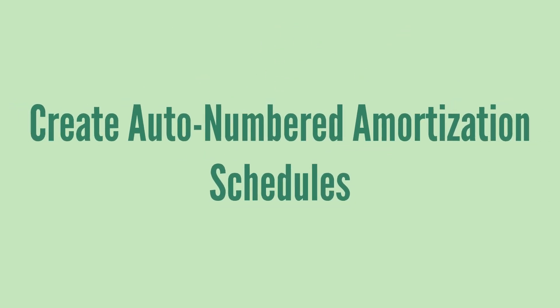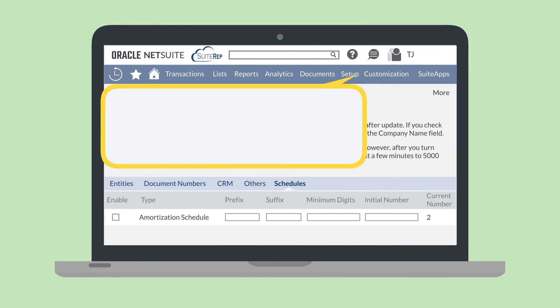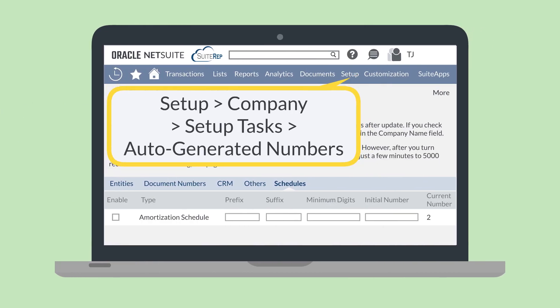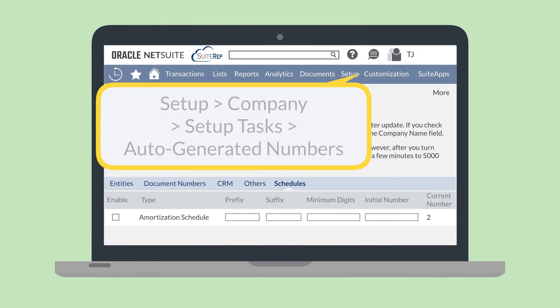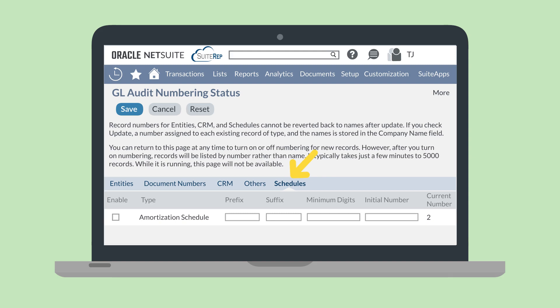Next, you'll have the option of creating auto-numbered amortization schedules. To do that, navigate to Setup, Company, Setup Tasks, Auto-Generated Numbers. Under the Schedules sub-tab, you'll be able to enable and define your numbering scheme for amortization schedules.